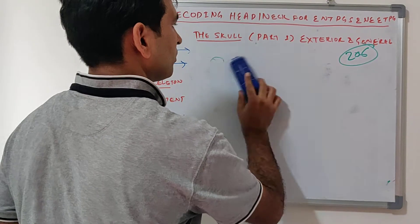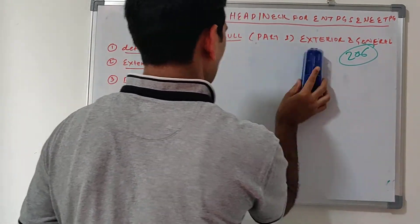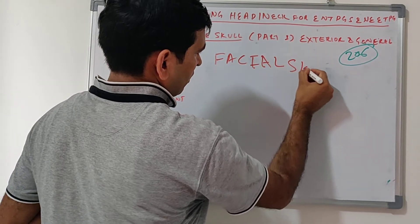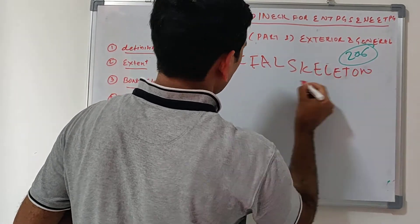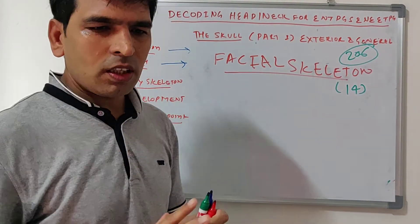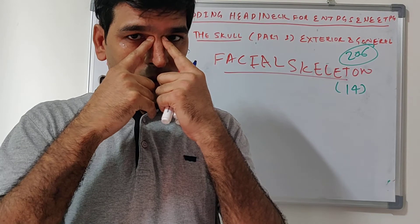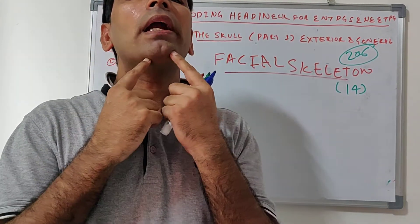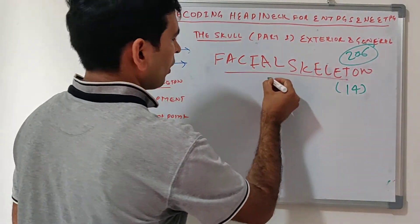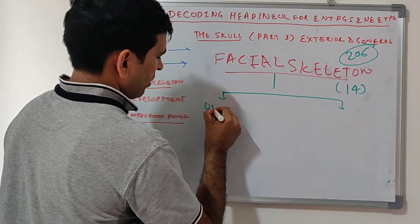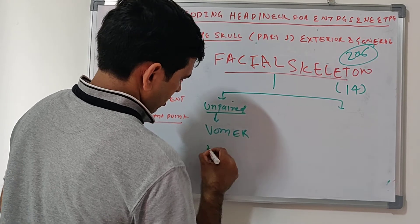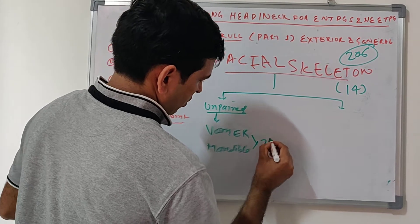Now we will talk about the facial skeleton, which has a total of 14 bones. These include: nasal bone, lacrimal, maxillary, zygomatic, mandible, vomer, and inferior turbinate. Unpaired bones are vomer and mandible - that is 2 bones.